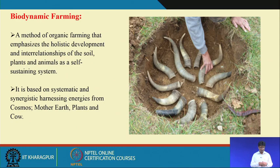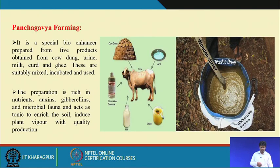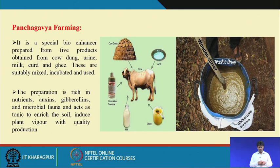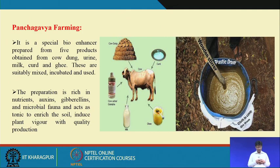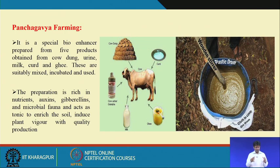The next type is panchagavya farming. This is a special bio-enhancer prepared from five products obtained from the cow: dung, urine, milk, curd and ghee. These five products are very useful for human beings. The cow dung is highly energistic and urine controls many pests and diseases. They are suitably mixed, incubated and used for crop production in organic farming.